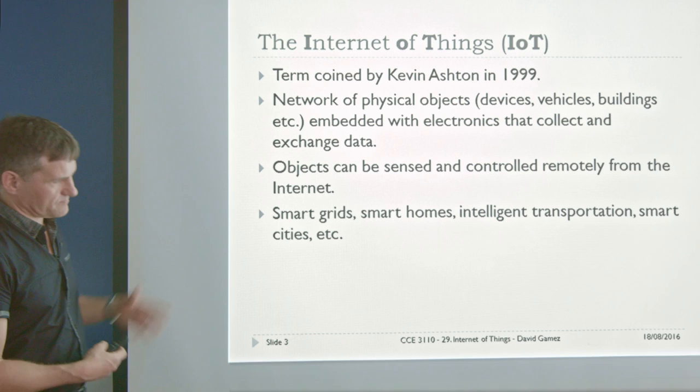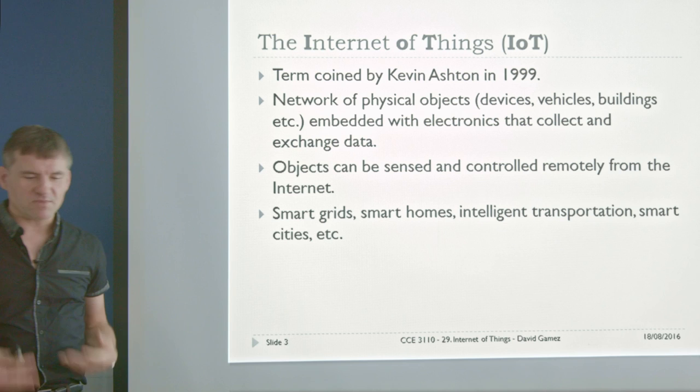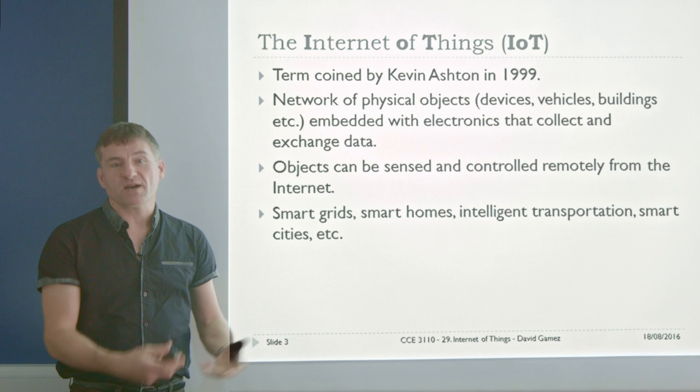We can sense and control objects remotely from the Internet, leading to catchy terms such as smart grids, smart homes, intelligent transportation, smart cities, and so on. It's a super trendy emergent field and lots of companies are scrambling to get a piece of the pie.